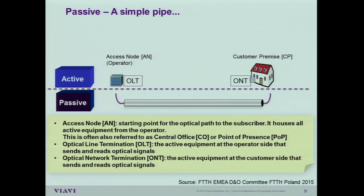So, what is PON? A passive optical network consists of many layers. The focus of my discussion will be around the active and the passive. The active layer consists of an active node — this is the beginning point of your PON network, which houses the transmission equipment that sends your signal to your premise or customer. This is often referred to as a central office, a point of presence, or in the cable world, a head end. Inside this building, we have the optical line terminal, which sends the signal downlink to the customer. On the customer side, you have an optical network terminal, which sends and receives the signal upstream and downstream.